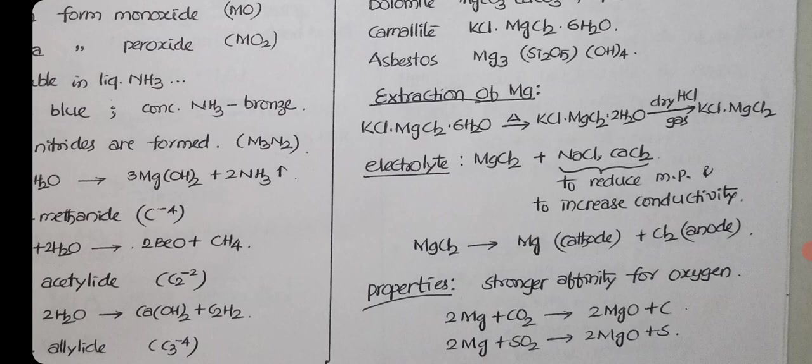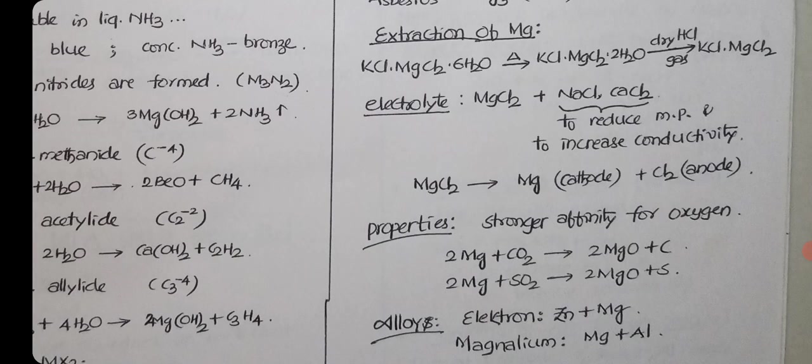Magnesium can be extracted from carnallite. Here we need to remove 6 water molecules. Otherwise magnesium chloride reacts with water to form magnesium hydroxychloride, MgOHCl, which is insulator. Your electrolysis process will be disturbed. To avoid that problem, we need to remove all water molecules. But the problem is when heating, all 6 water molecules cannot be removed, only 4 will go. Remaining 2 water molecules can be removed by using concentrated HCl. On electrolysis, you can get magnesium at cathode and chlorine at anode.